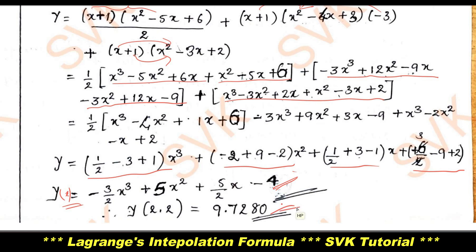This is how easy it is to solve problems using Lagrange's interpolation formula. You will already have the ready-made formula; just substitute the values of x0, x1, x2, x3 and multiply with y0, y1, y2, y3 up to yn. It is very easy — you can easily score marks from this part.